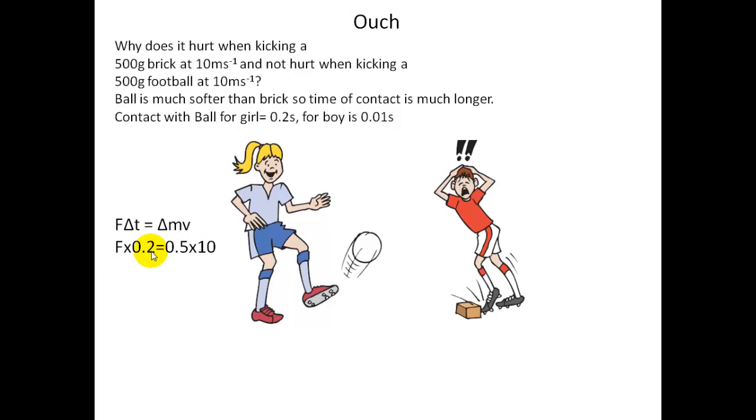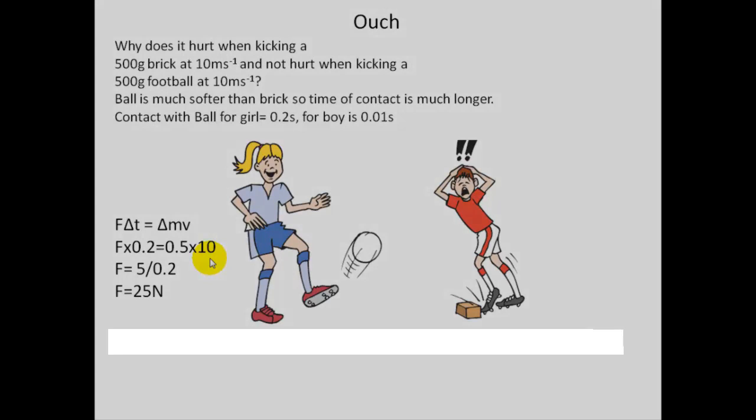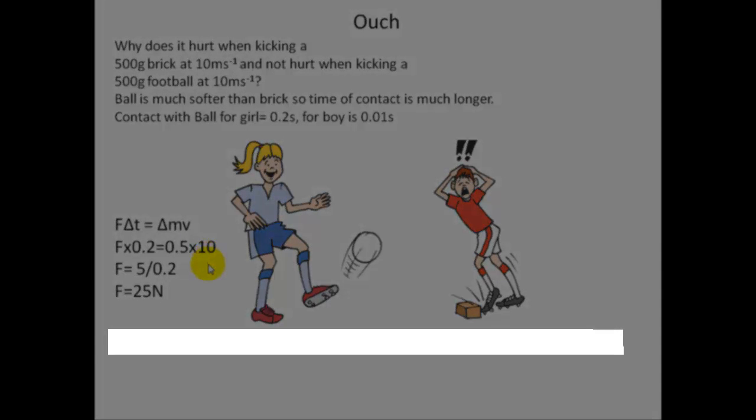F times 0.2 is equal to 0.5, which is the mass, times by 10. And that gives us a value for the force on her foot is 25 newtons. So she exerts a force on the ball of 25 newtons, which means the ball exerts a force on her foot of 25 newtons.